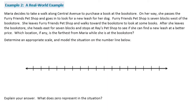Example 2, a real-world example. Maria decides to take a walk along Central Avenue to purchase a book at the bookstore. On her way, she passes the Furry Friends Pet Shop, which is seven blocks west of the bookstore. She then heads east for seven blocks and stops at Ray's Pet Shop to find a new leash at a better price. Which location, if any, is the furthest from Maria while she's at the bookstore? Determine an appropriate scale and model the situation on the number line.